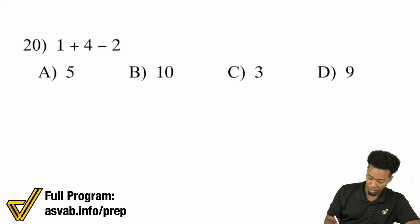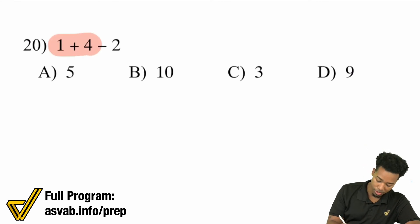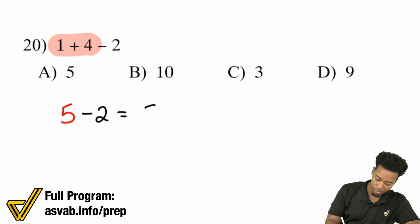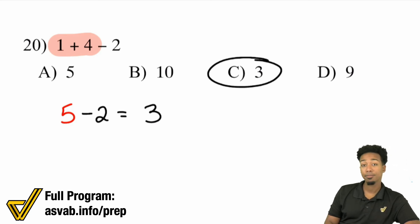Number 20: 1 plus 4 — what's that going to be? That's 5. Then we have 5 minus 2, and that's going to be 3. That's C.